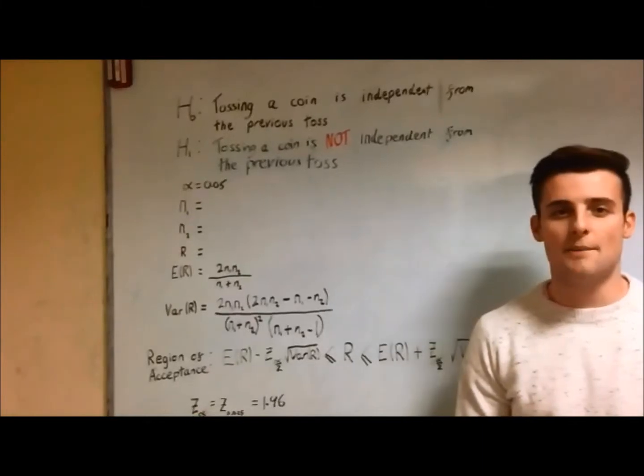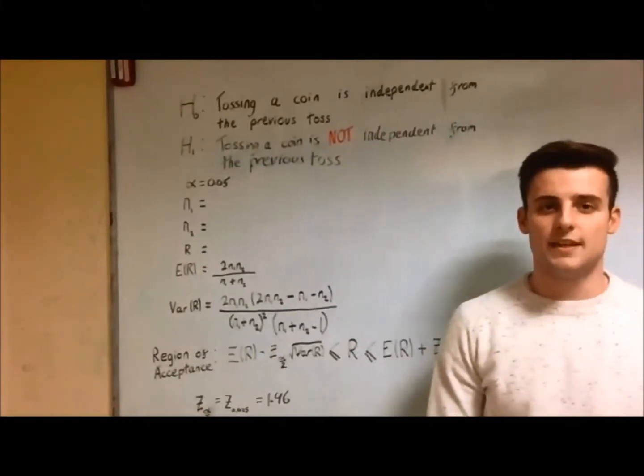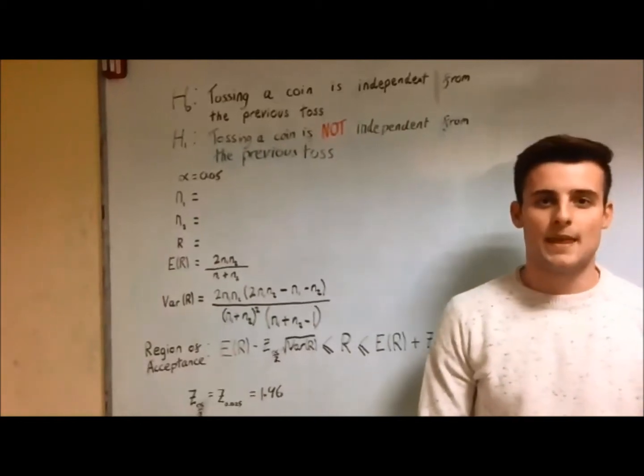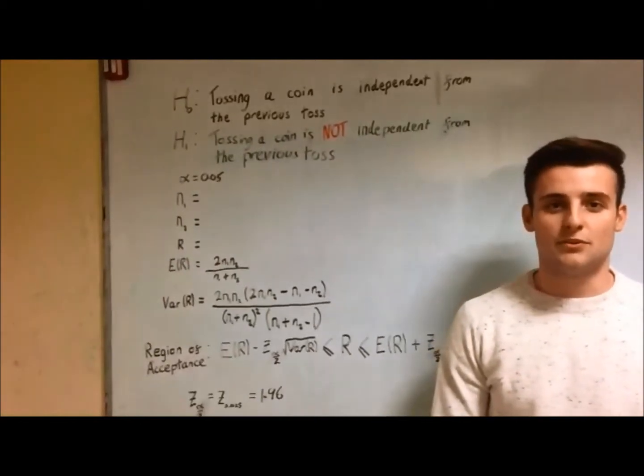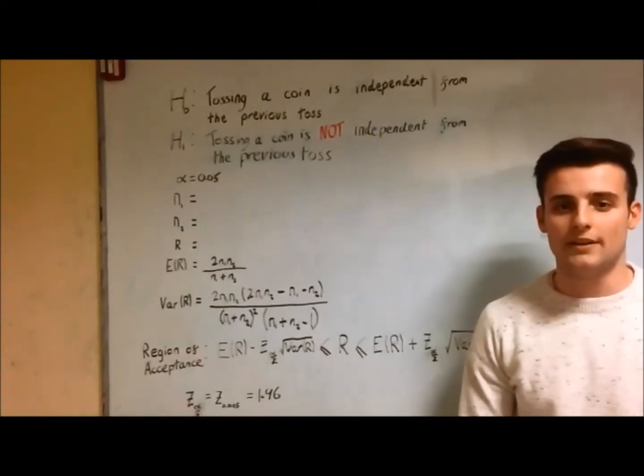We are going to illustrate this test by flipping a coin 30 times. The results of this test will determine if the previous results of flipping the coin is independent, therefore showing whether it is unbiased and random.